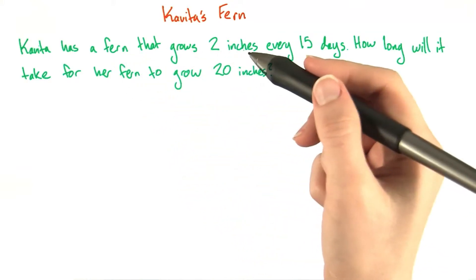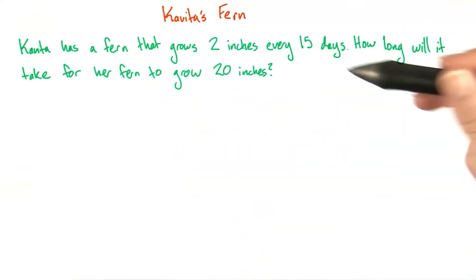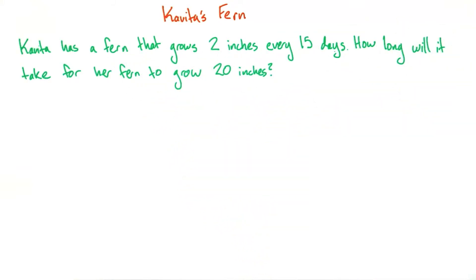Kavita has a fern that grows 2 inches every 15 days. She wants to know how long it will take for her fern to grow 20 inches. What's the correct way to set up this proportion?